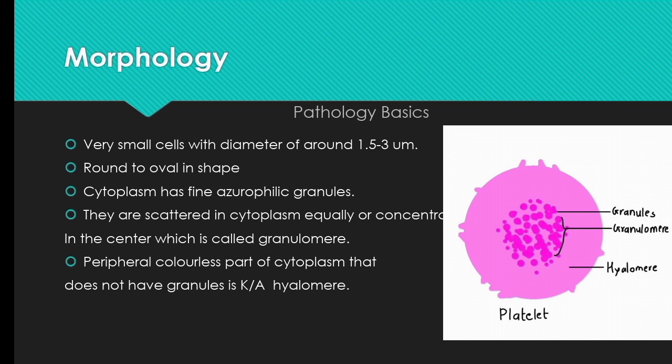Platelets are very small blood cells. Their diameter is around 1.5 to 3 microns. Their shape is round to oval. They stain pinkish with Romanowsky stain.